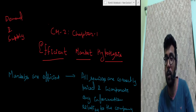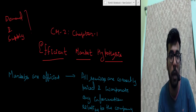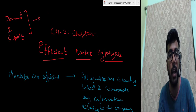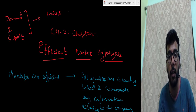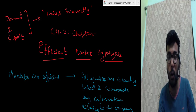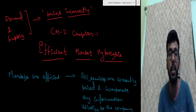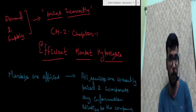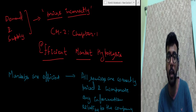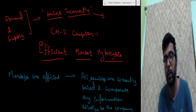An inefficient market is one which, based on demand and supply, prices the share incorrectly. Any commodity or share always has a fundamentally correct price — the price at which it should be. If the market prices the share incorrectly, then such a market is called an inefficient market.